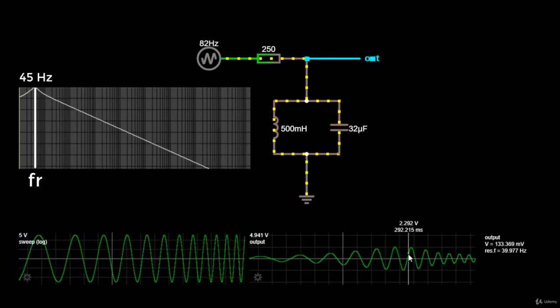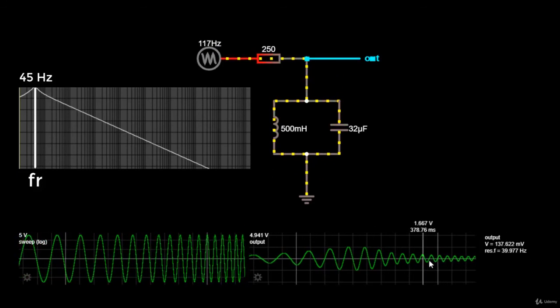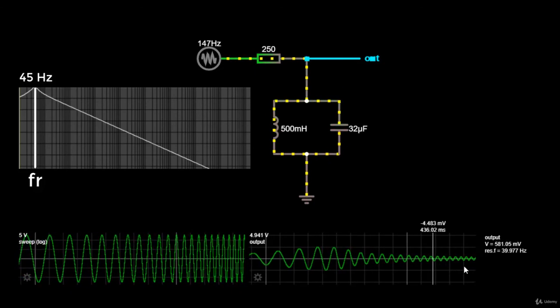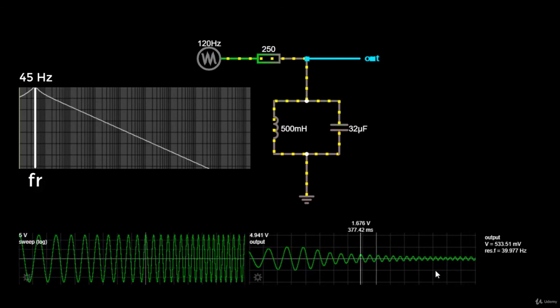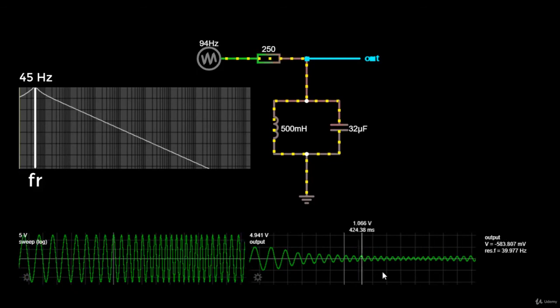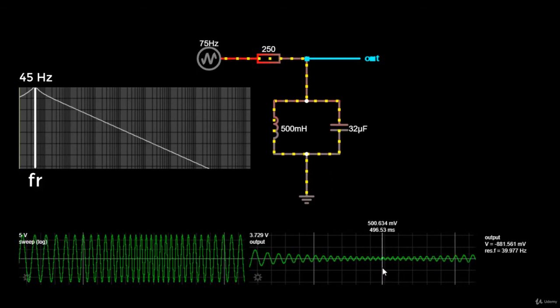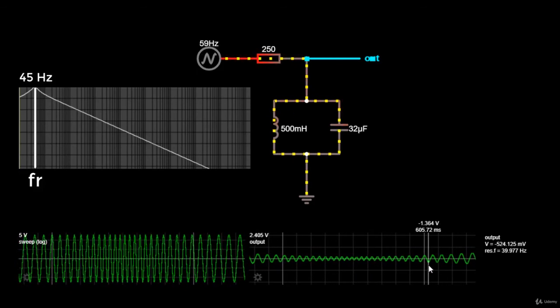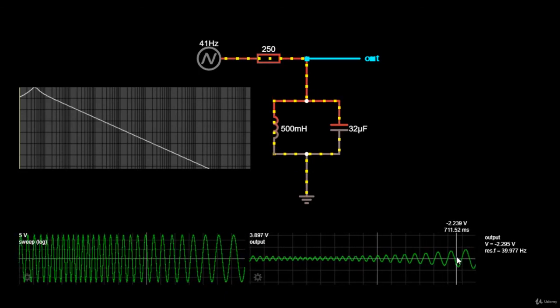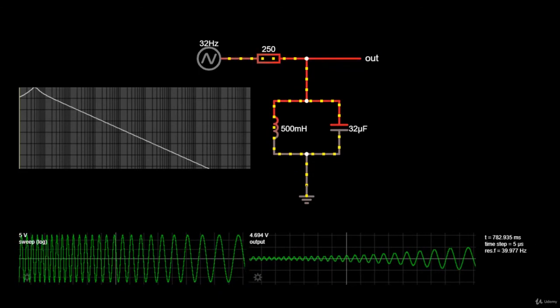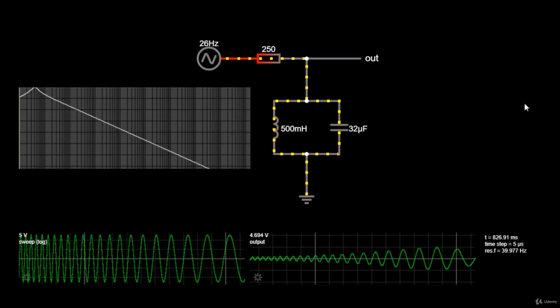After the frequency passes 45 Hz, the signal starts to get attenuated again. So, this means that our bandpass filter works just fine. I'll see you in the next one. Thank you.